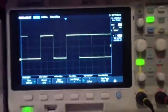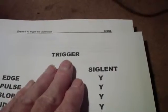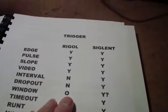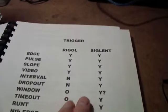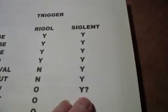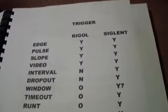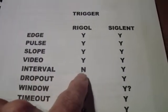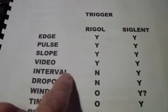I begin this video with an apology and a significant revision to the trigger comparison chart. As I was trying to figure out the window function — particularly of the Siglent — the Rigol seems to work the way it's specified. The Siglent has some peculiarities, so I've put a question mark there. In the course of that, I also went through a number of the other triggers and had to make a lot of revisions. You may recall I was doing the interval trigger on the Siglent.